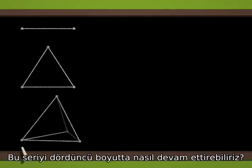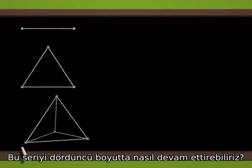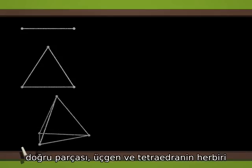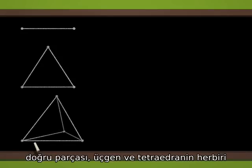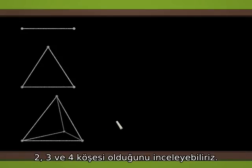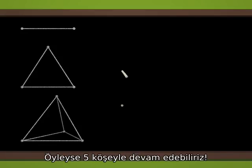and finally, a regular tetrahedron. Our magical blackboard enables us to draw in space. How can we keep this up in four dimensions? Observe that the segment, the triangle, and the tetrahedron have two, three, and four vertices respectively.